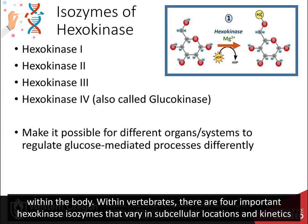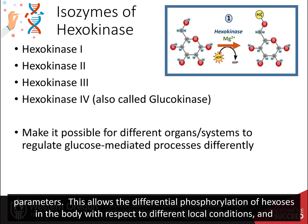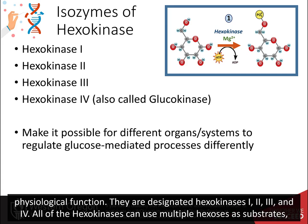Within vertebrates, there are four important hexokinase isozymes that vary in subcellular locations and kinetic parameters. This allows the differential phosphorylation of hexoses in the body with respect to different local conditions and physiological functions.